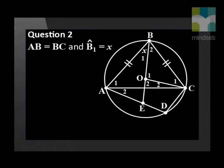In the diagram, O is the center of the circle. A, B, C, and D are points on the circumference of the circle. EOB is a straight line such that E lies on AD. AB is equal to BC and angle B1 is equal to X.